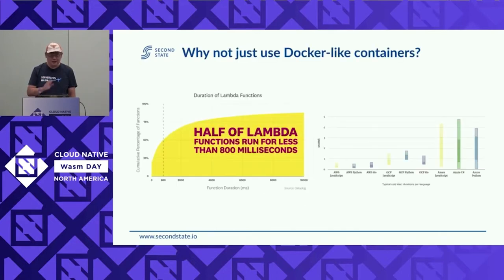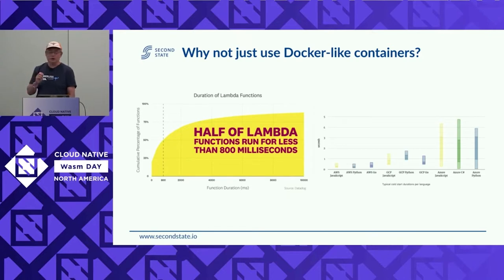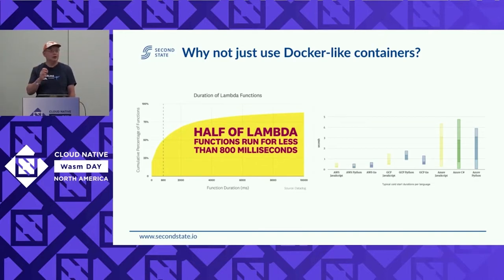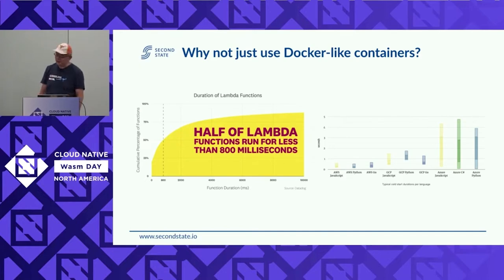However, there is still a dark cloud on the horizon, so to speak. Today most serverless functions or function-as-a-service functions are implemented using what we call micro-VMs or Docker-like containers. You are essentially running the function inside an application container. Just think about the work you have to go through to run a function — say the function is 10 lines of JavaScript code. You have to start Docker or the micro-VM, start an operating system in it, start Node.js, run 10 lines of code, and then shut it all down.